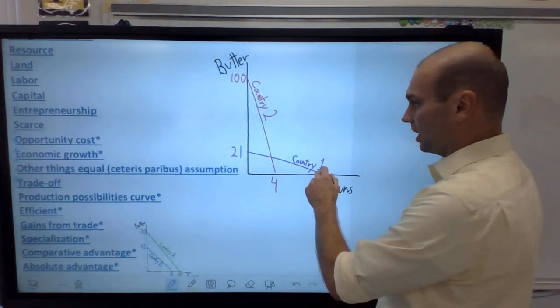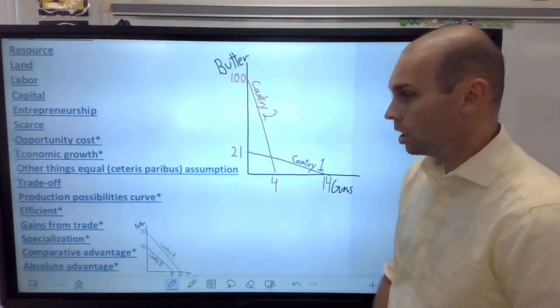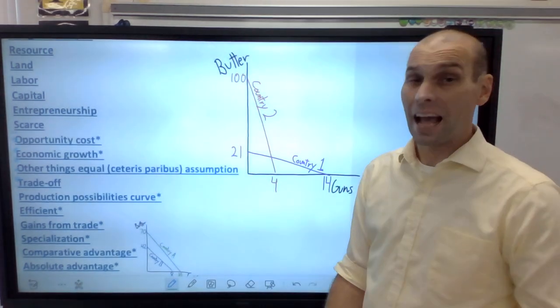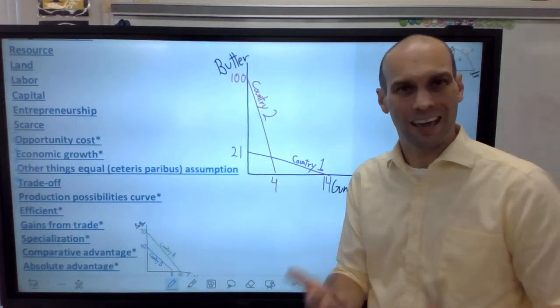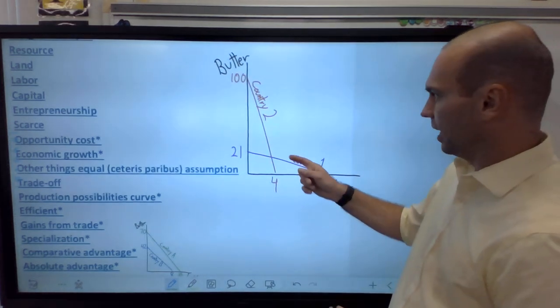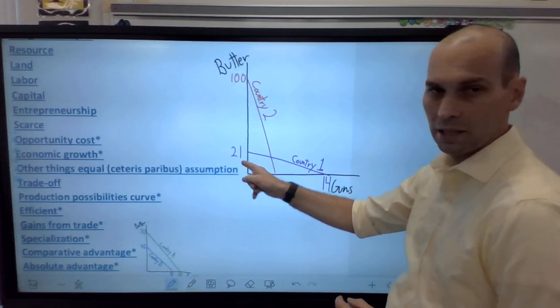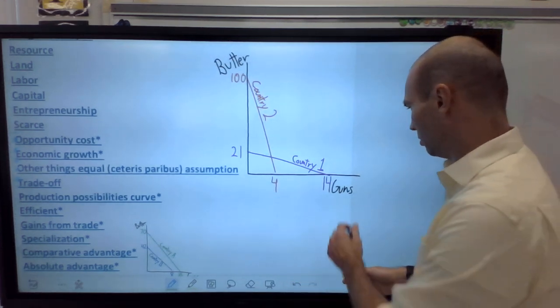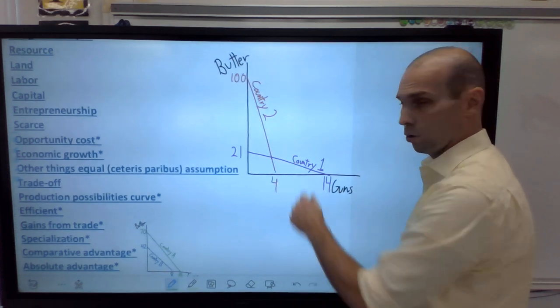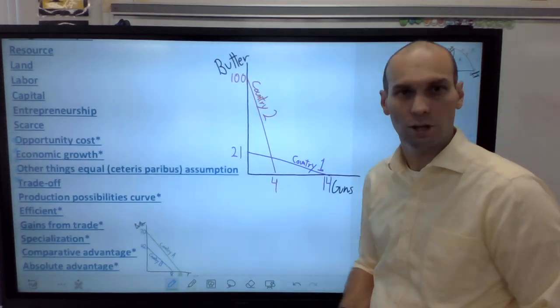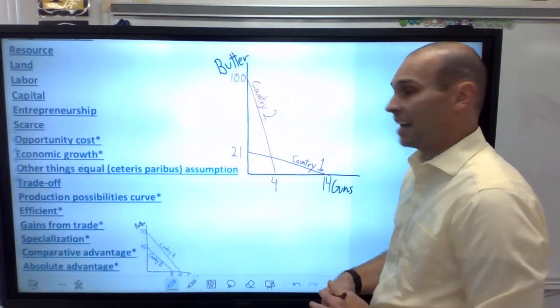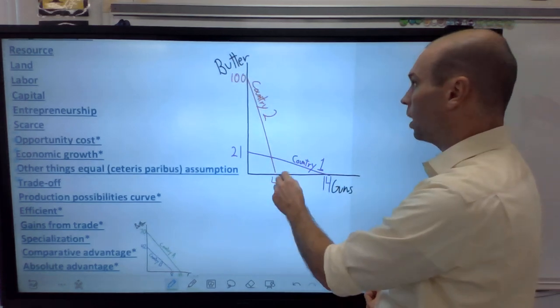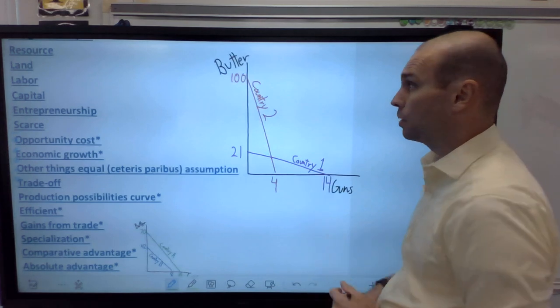So we're making guns and butter and country two, if they put all their resources into play and are efficient, they can produce 100 units of butter, or they can produce four guns or anything in between. Now it's a straight line. So we'll assume that all resources are equally usable in production in both goods. It should be a curved line, but in this one, we're making an assumption. If we make that assumption, it means we have straight lines and straight lines, it's easy math. Country one here makes 21 units of butter and 14 guns.